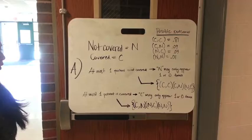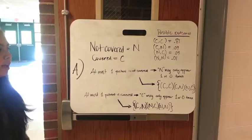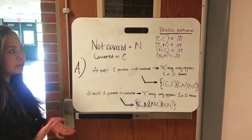The question is asking for the set that would include the probability that at most one patient is not covered. That means you want to include the ones where either there's no patients that are not covered or one patient that's not covered.